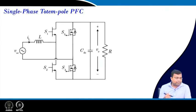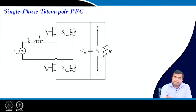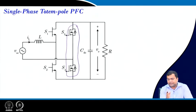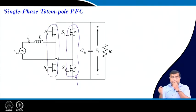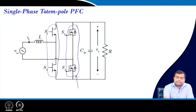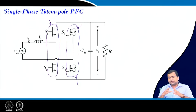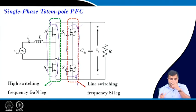For the totem pole PFC, we replace the lossy diode bridge with MOSFETs. With wide-bandgap devices, we can replace one half-bridge leg with MOSFETs whose body diodes function like diodes. The low-frequency leg operates at line frequency (50 or 60 Hz using silicon devices), while the high-frequency leg uses wide-bandgap devices — GaN or SiC — operating at much higher switching frequencies in a boost-type operation.